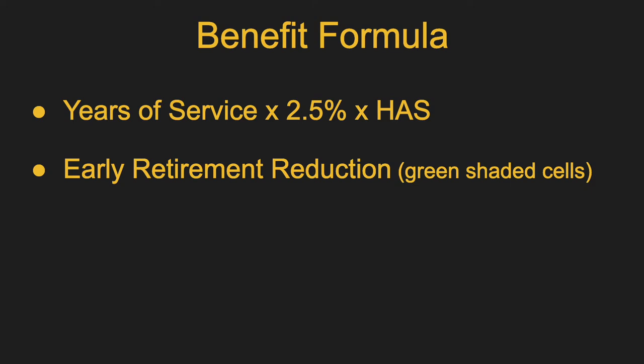If you qualify for a full retirement, that's great. But if you retire in those green shaded cells in your HAS table, it'll be an early retirement reduction. Instead of using the 2.5% formula, you'll have to look at the percent actually in that green shaded cell, which will be less. Because you're retiring early, you're going to be getting a benefit longer, so that benefit is going to be lower.